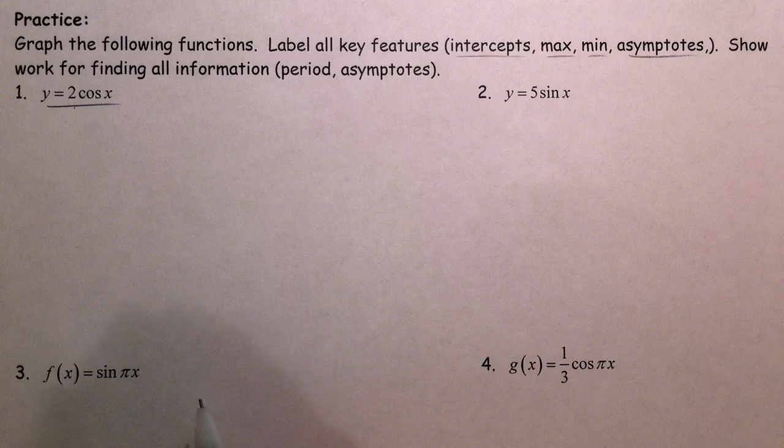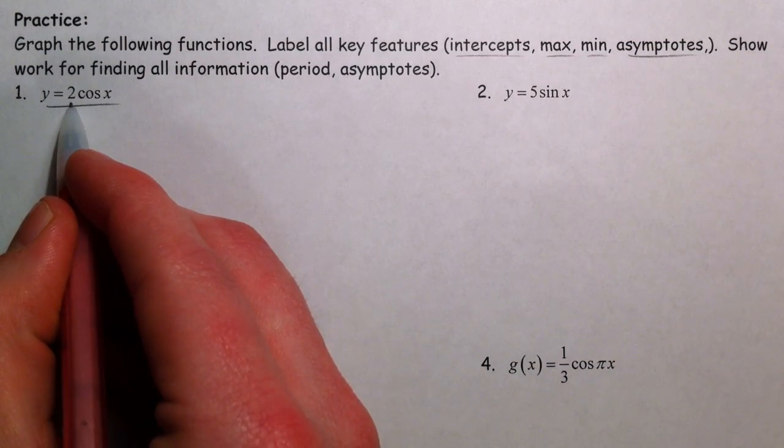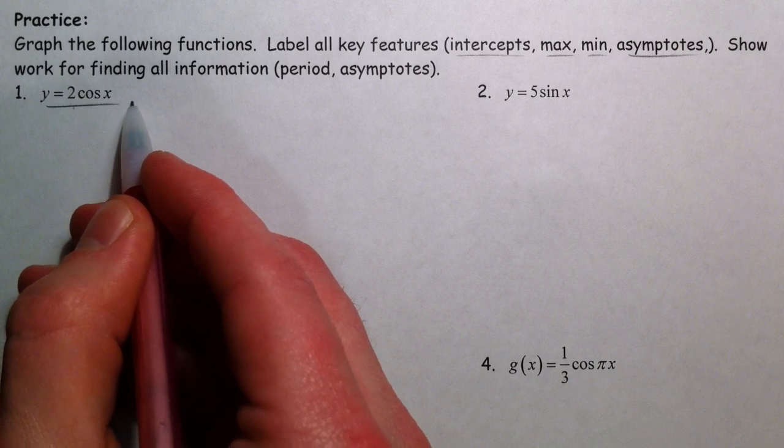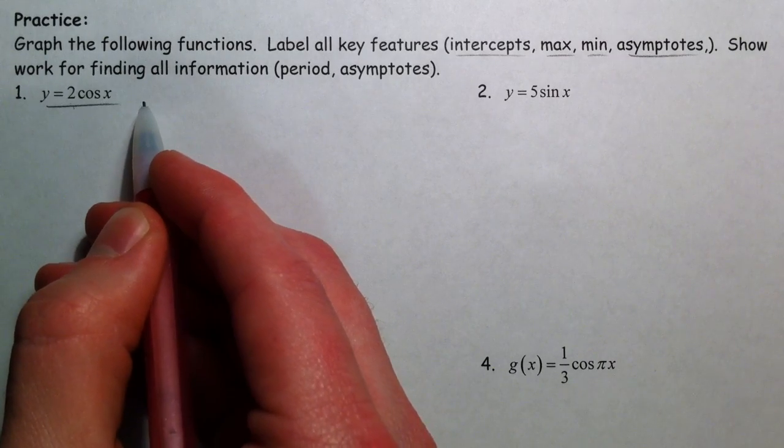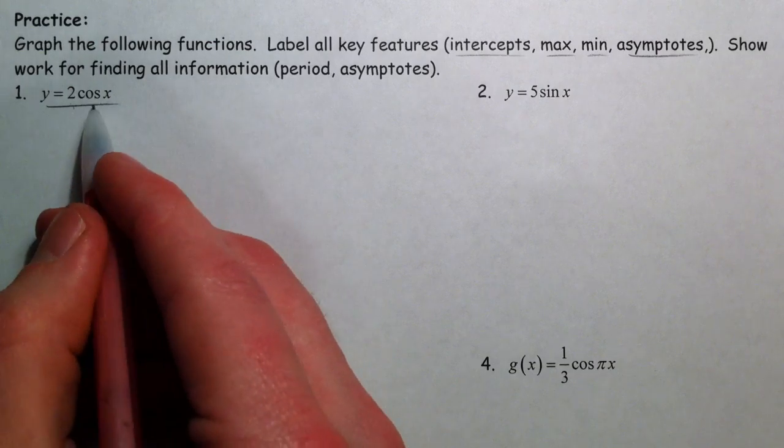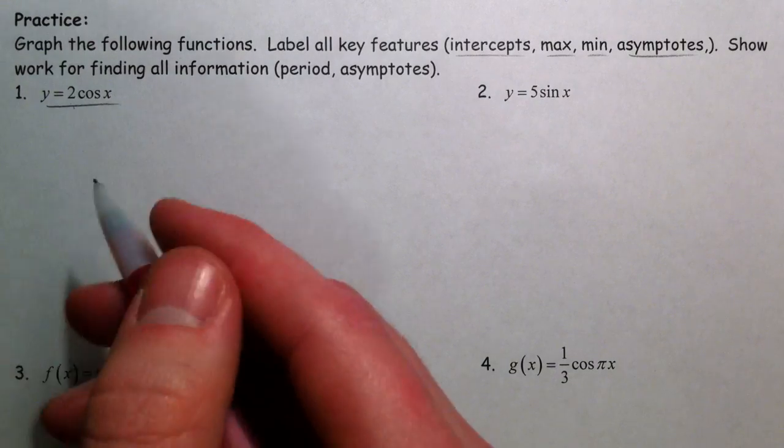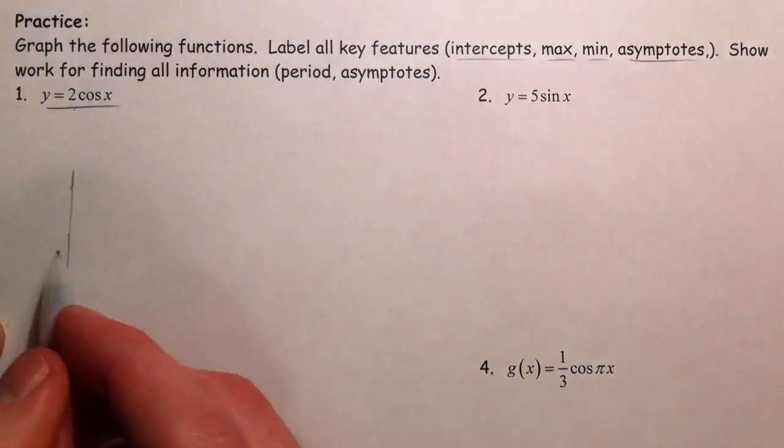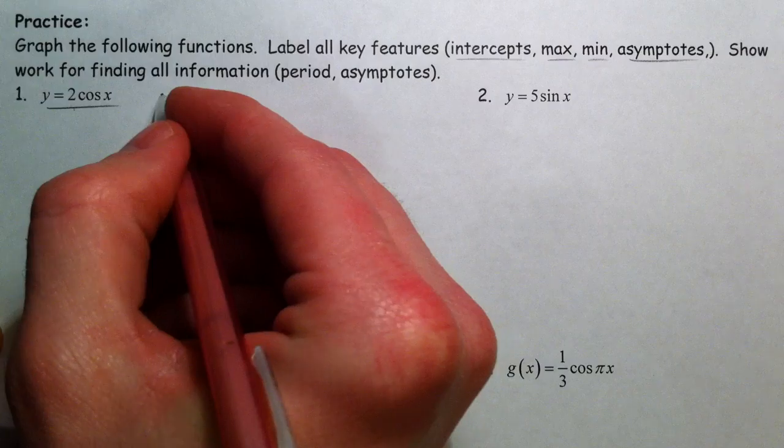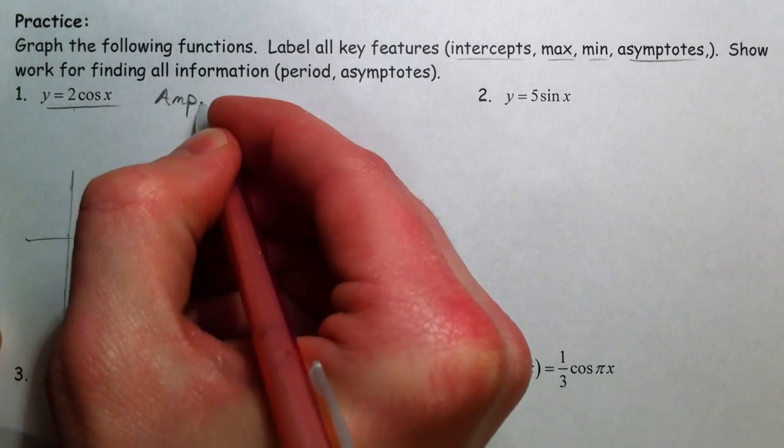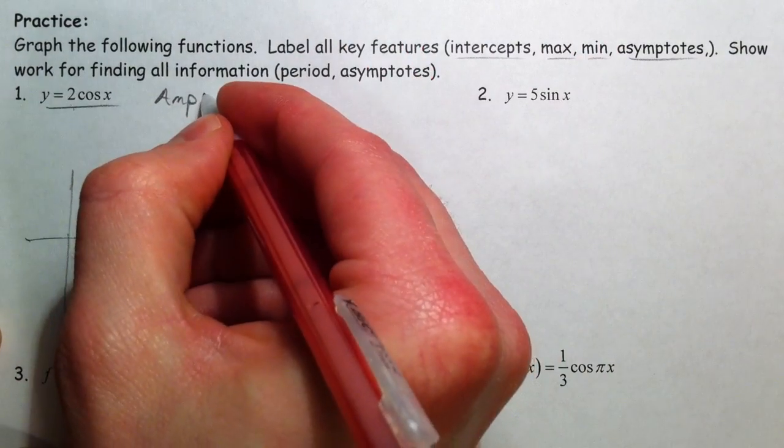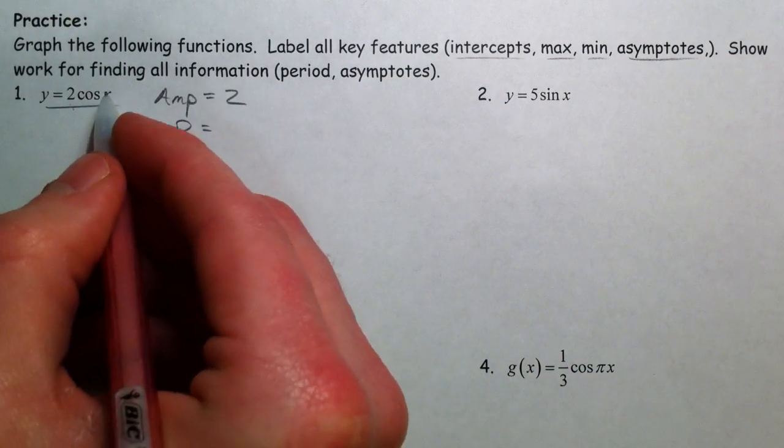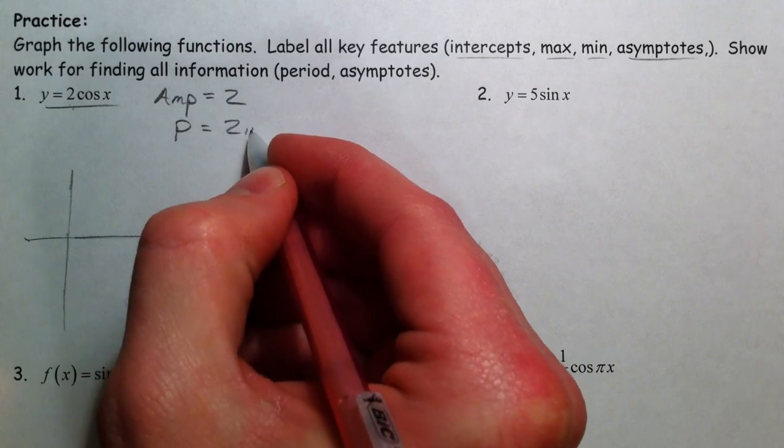What does a 2 out in front do? Well the 2 is going to multiply all the values that were in cosine of x. So where it was 1 before, now it's going to be 2. Where it was 0, 2 times 0 is still going to be 0. Where it was negative 1, now it's going to be negative 2. And so it's going to stretch it out vertically. And so what we're going to say is that 2 affects the amplitude. Amplitude equals 2.